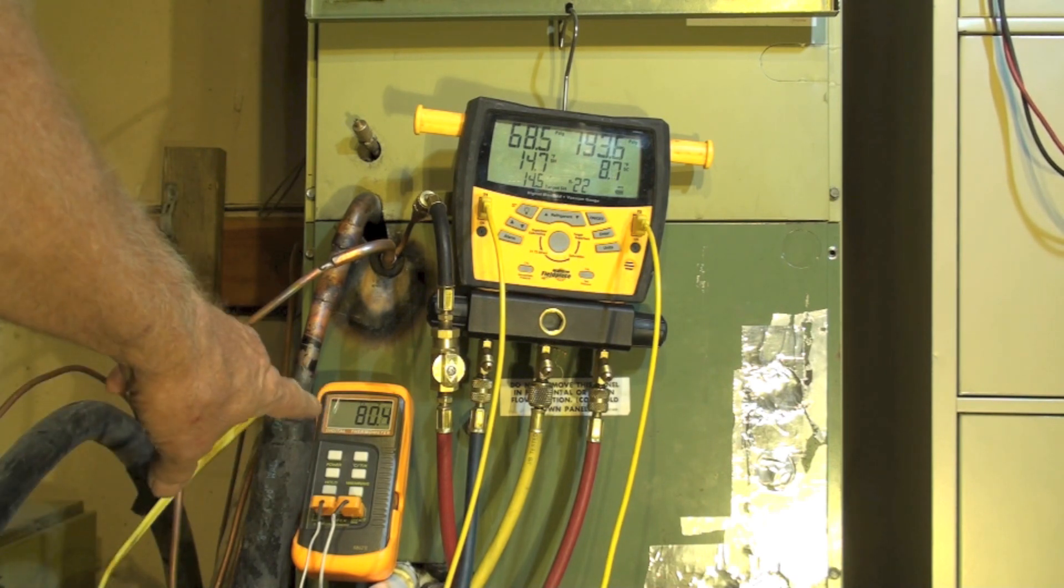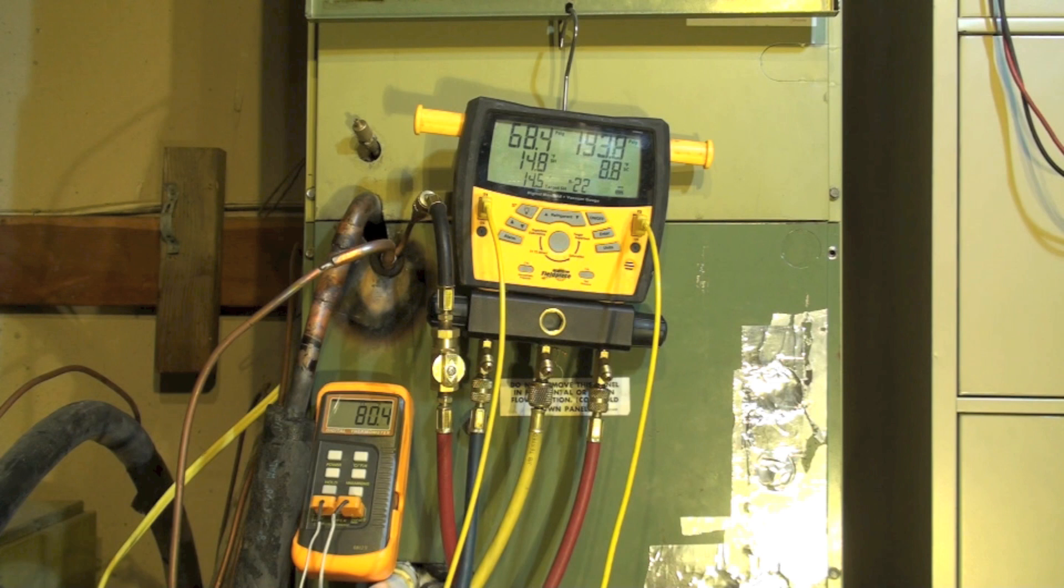...right there for the return air. We're at 68.5 psig low side, 15 degrees superheat, target superheat 14.5. Head pressure is 194 and 8.8 on subcool. Now I'm going to pull this gauge set off, but I'm going to pump down the gauge set.